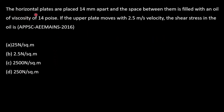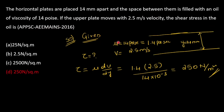Next question: horizontal plates are placed 14 mm apart and the space between them is filled with oil of viscosity 14 poise. If the upper plate is moved with 2.5 m/s velocity, find the shear stress in the oil. Given: separation Y = 14 mm, viscosity = 14 poise = 1.4 pascal·second, velocity = 2.5 m/s. Using the shear stress formula, you get 250 newton per meter square. Option D is the correct answer.